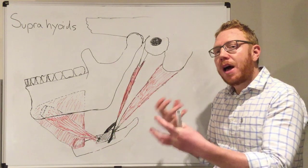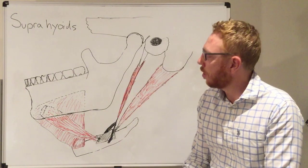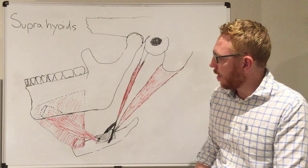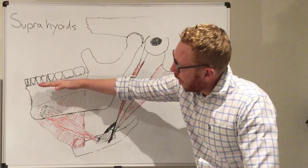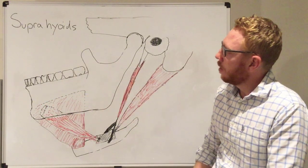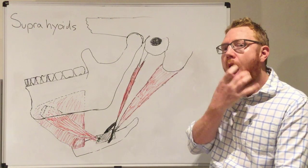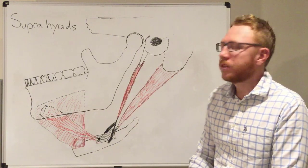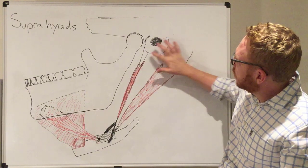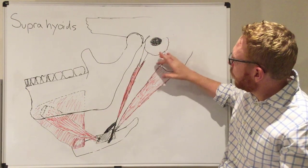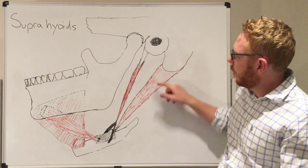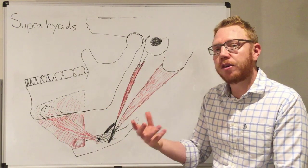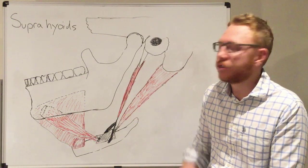The digastric comes out of two arches. The anterior belly comes from the first pharyngeal arch, so it's innervated by a branch of V3, the trigeminal nerve — specifically the mylohyoid branch. The posterior belly comes from the second arch, so it's innervated by the facial nerve. In terms of action, it depresses and retracts the mandible, helping to open the jaw, particularly working with the lateral pterygoids.